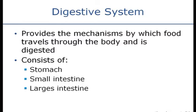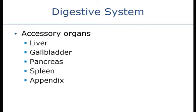As food travels through the different parts of the small intestine, different digestive processes occur — the digestion of amino acids, fats, and so forth. Then as it gets into the large intestine, which is made up of the transverse colon, the descending colon, and the anus, further digestion occurs. The removal of water occurs there — that's where we get our body water, through our colon — and that's also where stool is formed.